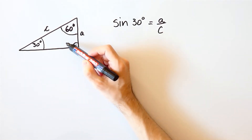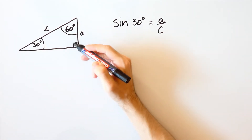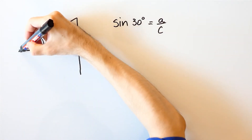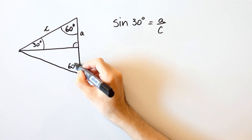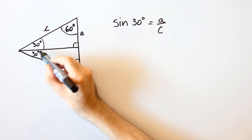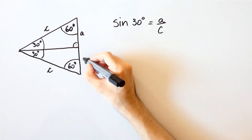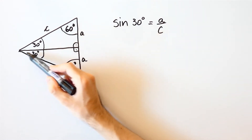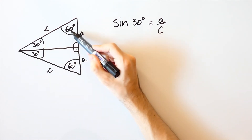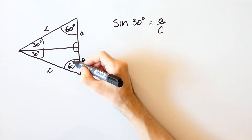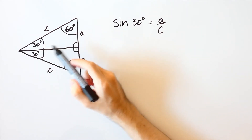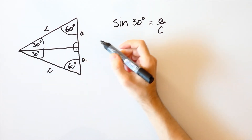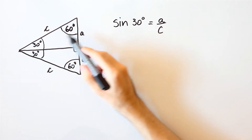But what is so special about this triangle? Well, if we draw another such triangle over here, we get a triangle for which each angle is equal to 60 degrees, which means that this triangle is an equilateral triangle. So, 2a is equal to c.